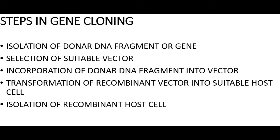These are the steps involved in gene cloning: first, isolation of the donor DNA fragment or gene; next, selection of a suitable vector; then incorporation of the donor DNA fragment into the vector; transformation of the recombinant vector into a suitable host cell; and finally, isolation of the recombinant host cell.